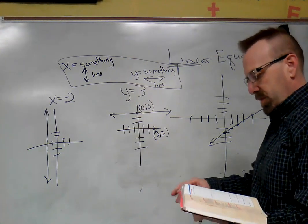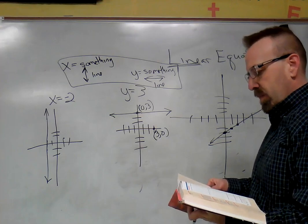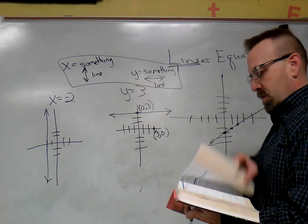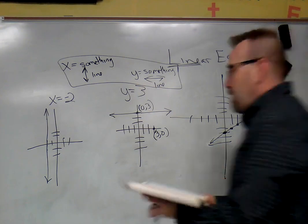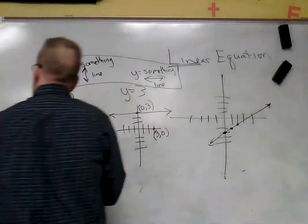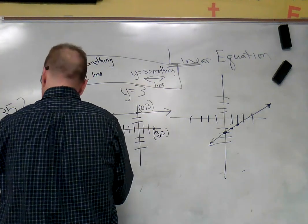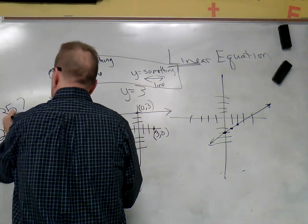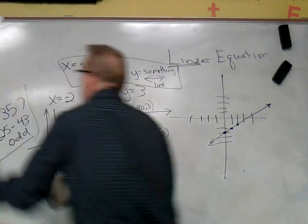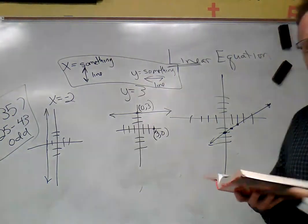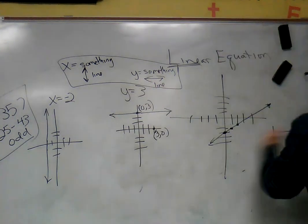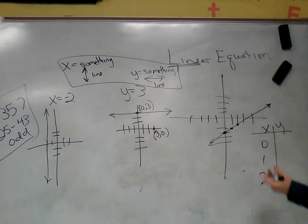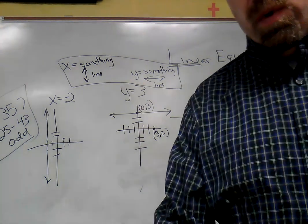All right, so what are you going to do for me today? On page 357, 25 to 43 odd. I would recommend using graph paper. So make your t-chart first, and choose any three points. But it's usually zero and one are going to give you the simplest math. And then graph your three points.